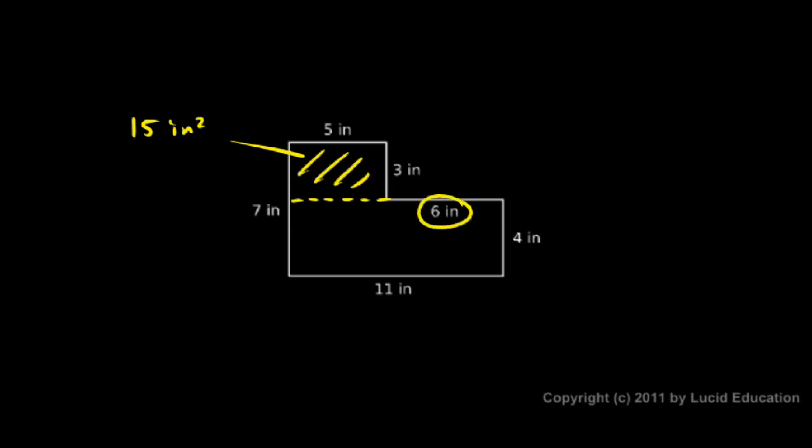This one on the bottom, don't get confused by the six here. The six is just this length right there. We need this length, the eleven and the four. So this area down here is eleven times four, which is forty-four, and again it's square inches.